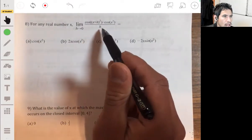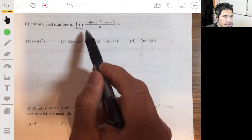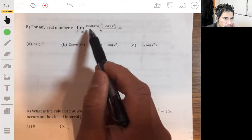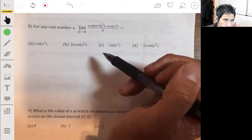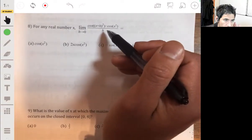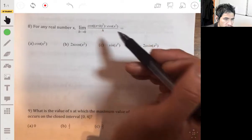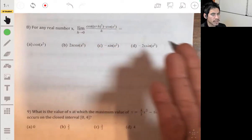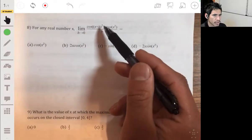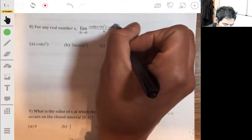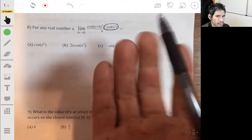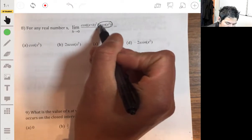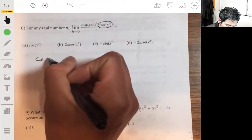Anyways, problem eight. For any real number x, the limit as h approaches zero - okay, so this is just the derivative expression. This is literally the formal definition of a derivative, if you recall. So we just can take the derivative using our fancy quick rules instead of having to do this very tediously. So we're really just taking the derivative of the cosine of x squared.